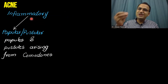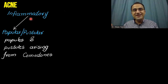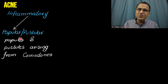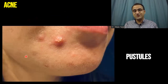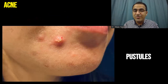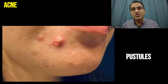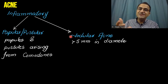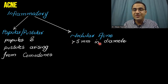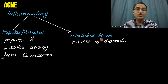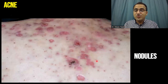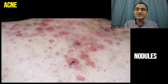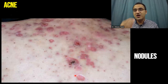Inflammatory acne occurs whenever there is severe infection with Cutibacterium acnes, resulting in the formation of pus — papules and pustules arising from comedones. This picture shows pus visible in this form of acne. When these pus-filled cavities increase in size and are greater than 5 millimeters in diameter, that is called nodular acne — the most severe form that can result in scarring. This picture shows nodular acne with lesions greater than 5 millimeters that have ruptured, resulting in scar formation.